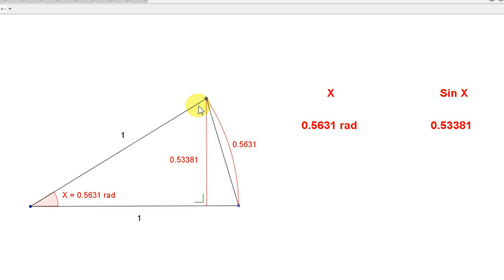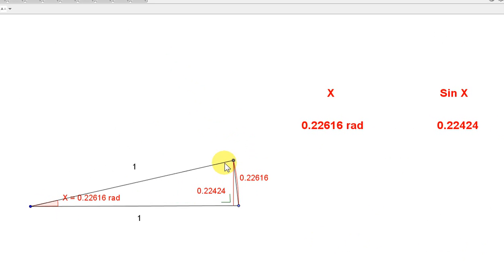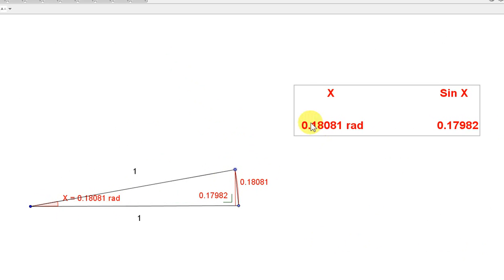Now, let us make x approach 0. Here we have an angle of 0.18081 radians. This angle here is about 10 degrees. We can see that to two decimal places, when x is about 10 degrees, the sin of x in radians is the same. This number to two decimal places is 0.18.